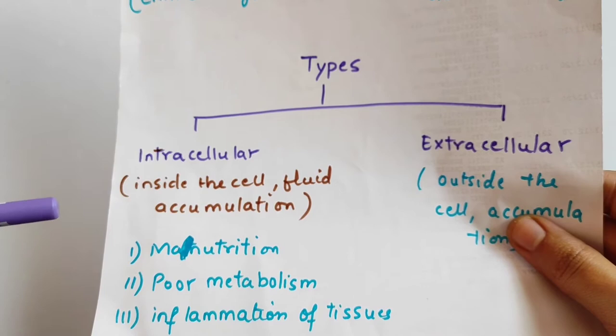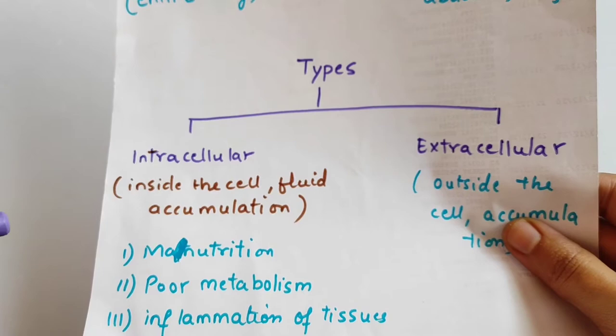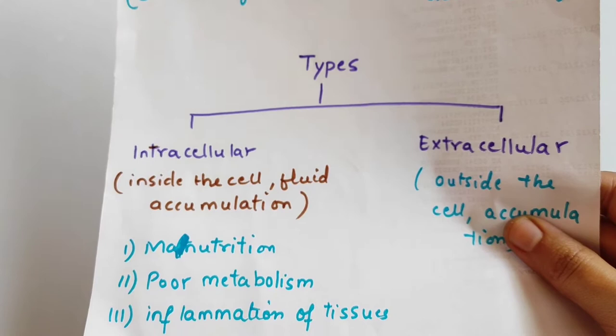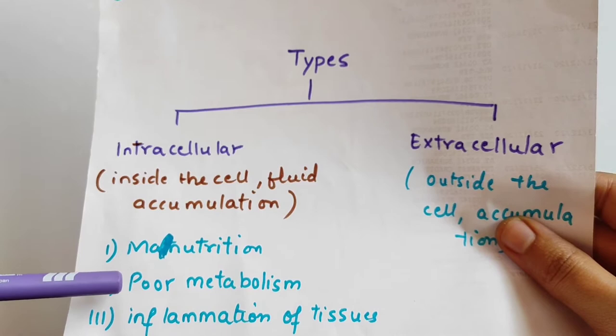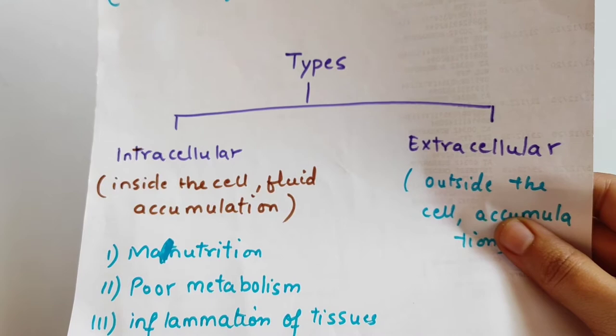In malnutrition, nutrients are not properly supplied to our tissues. So the permeability of the cell membrane will increase and the fluid will enter into the cells. In poor metabolism, blood supply is not proper for the cells, so the cell membrane permeability will also increase and fluid will enter the cells.